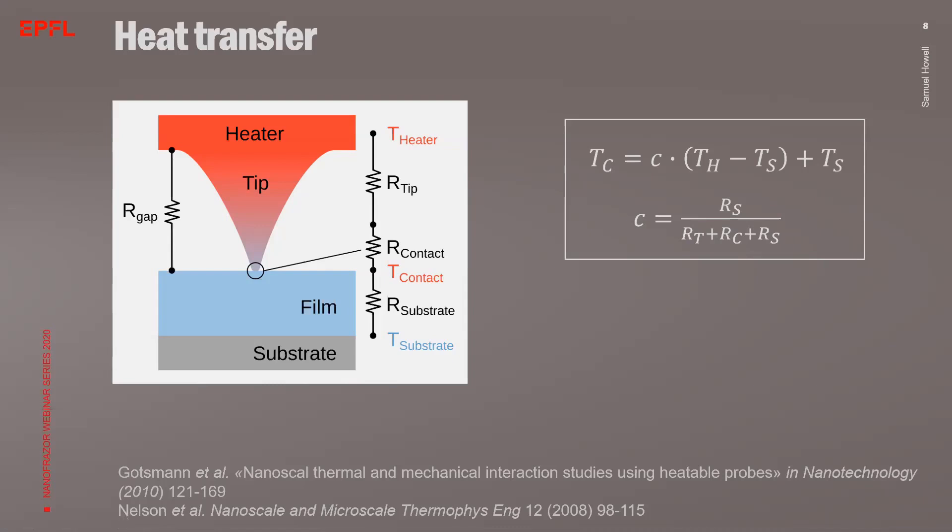On one hand, higher tip resistance and higher contact resistance decrease the heating efficiency. On the other hand, a higher substrate thermal resistance increases the heating efficiency and hence the contact temperature. So in case of a 4-inch silicon wafer, the substrate is huge in comparison to the heated tip and acts as an efficient heat sink. In order to heat the thin film to temperature larger than the substrate, the film material should be a good thermal insulator. Luckily, this is the case for most polymers.